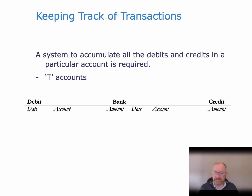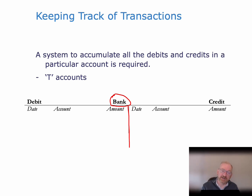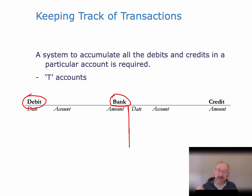So what is a T-account and how does it work? The first thing is a T-account is for a particular account — here the T-account is for the bank account, and we write that in the middle of the T. We draw a T on the page with the line down the middle, and we write the name of the account up here. Each account in our balance sheet, statement of financial position, and income statement will have its own T-account. On the left-hand side of the T-account we put all the debits posted to that account, and on the right-hand side we put all the credits.